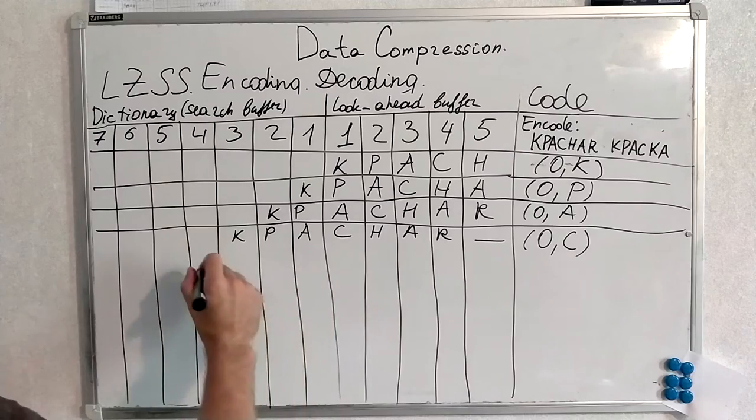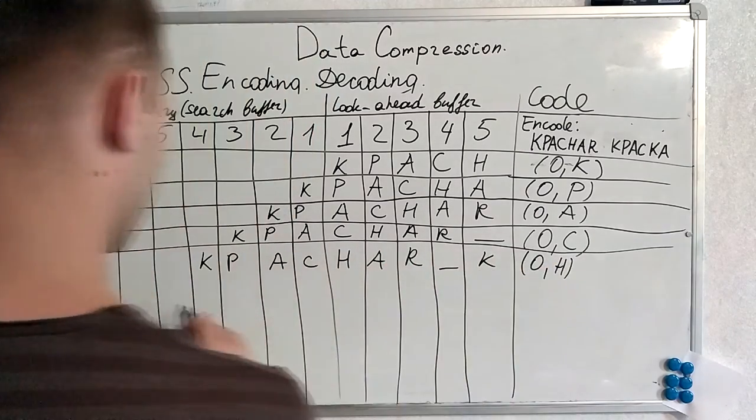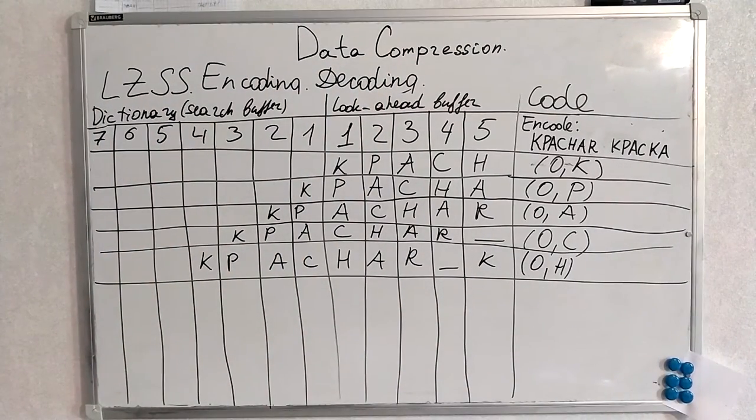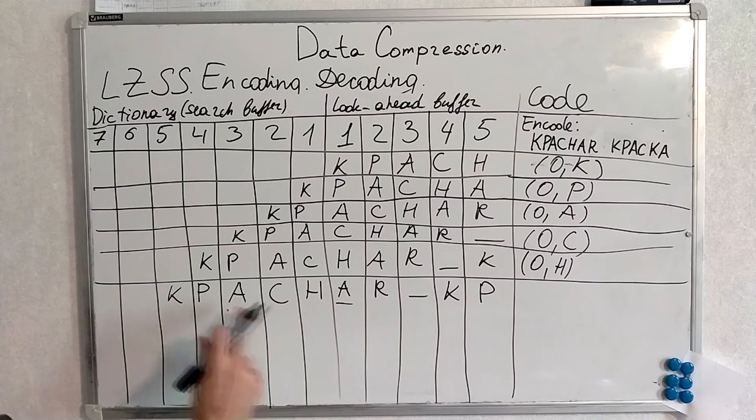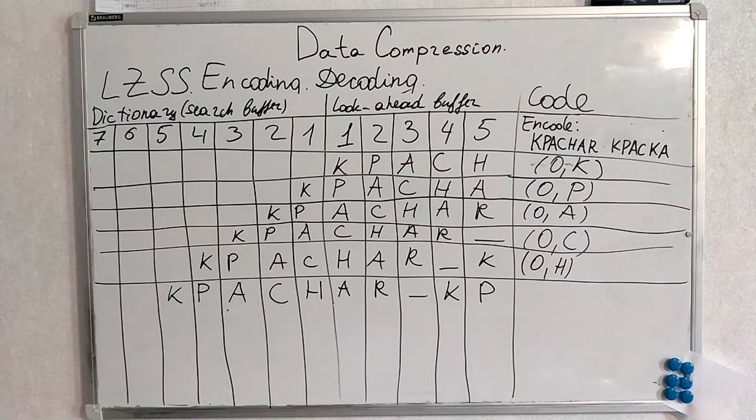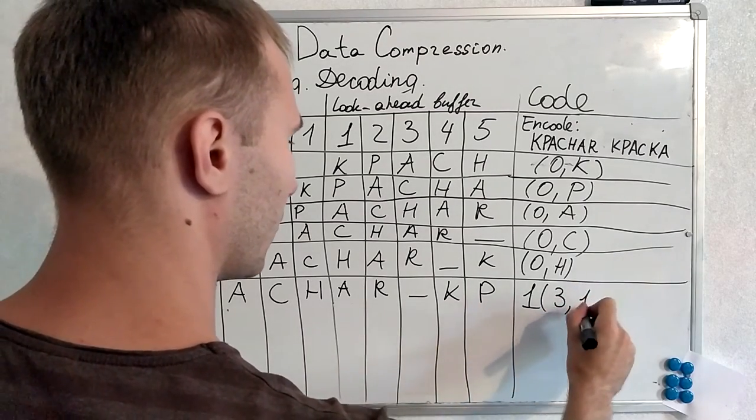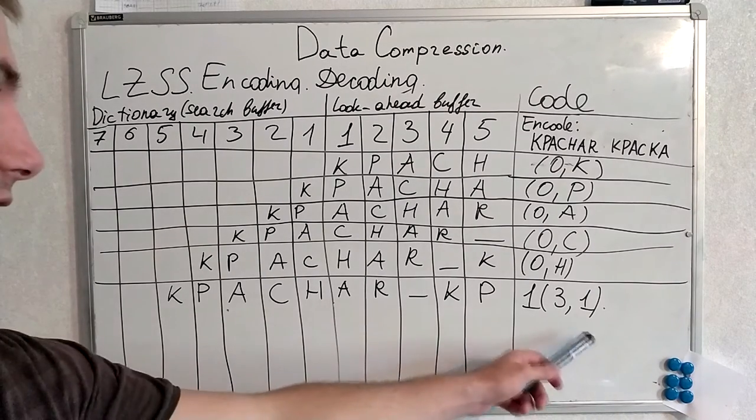With H. But on this step, finally, we find something what our dictionary contains. It's A. Thus, we encode 1, 3, 1. We mark that we have found the symbol. We mark here also the offset and the length.